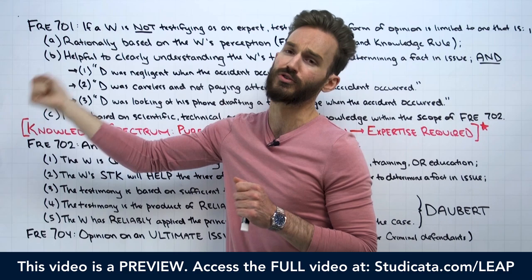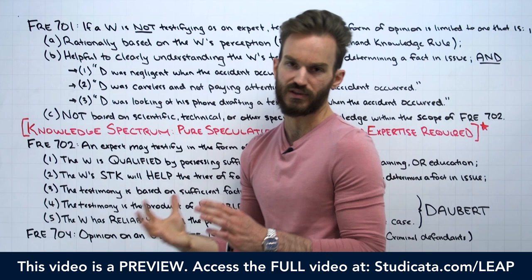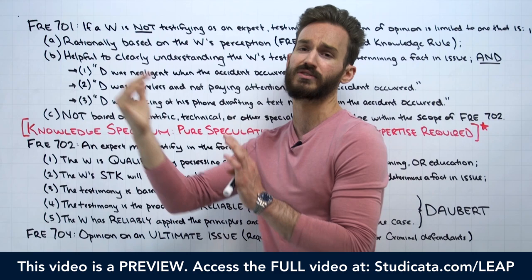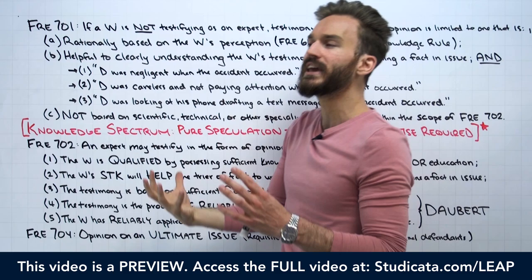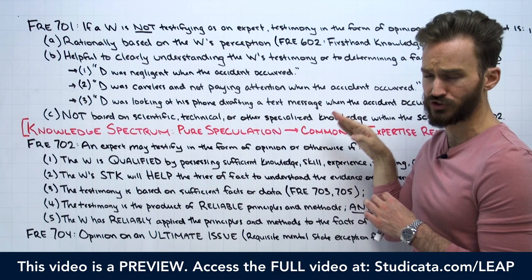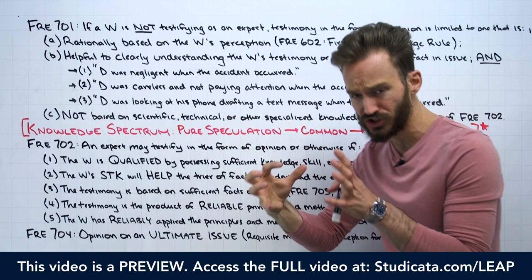Experts might have an added qualification where they can give some opinions that will help the jury determine the facts of the case. If we can qualify someone as an expert, their opinions are more admissible and more helpful to the jury than a lay witness's opinion. So if we see a witness offering an opinion, step one — our gateway issue — is to think about the knowledge spectrum and place the opinion on it.